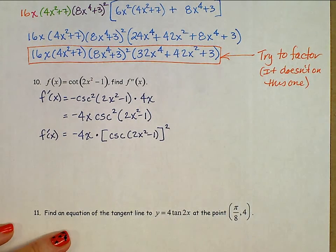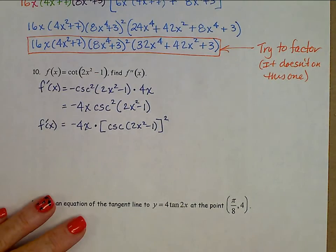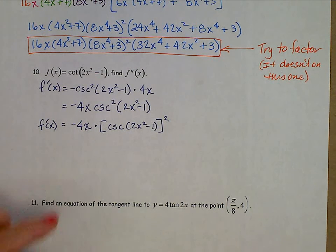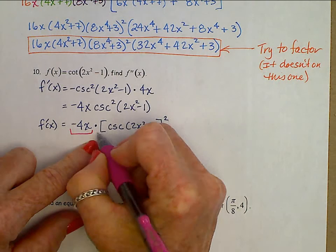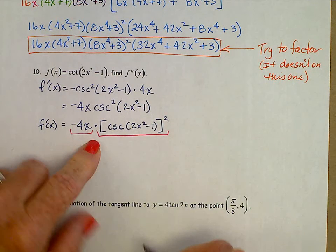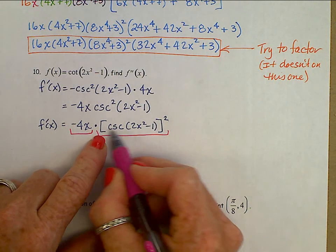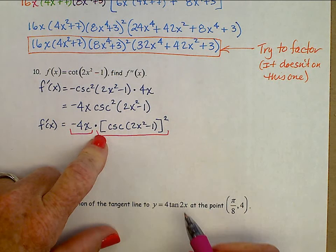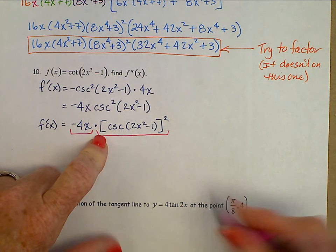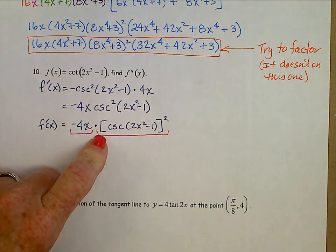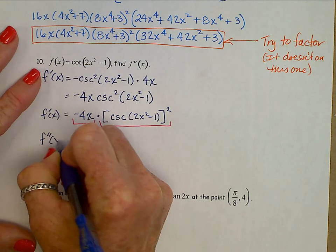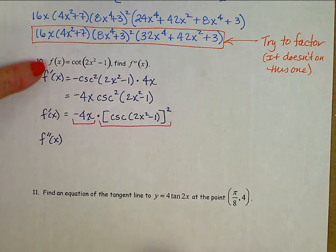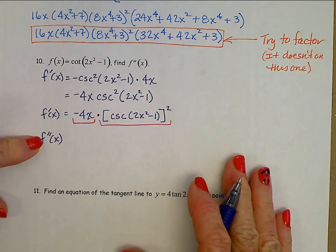Now we have to take the second derivative. Do you see a product rule here? We have a first piece and a second piece, and within the second piece there's a chain rule when we differentiate. Don't quit — just take it piece by piece. F double prime. Notice the notation — identifying F prime, and once we start taking the second derivative, F double prime. Alright, first function: negative 4X, times the derivative of the second.